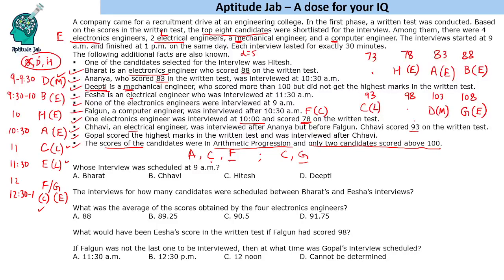Two people — Fagun and Isha — still have unknown scores and unknown interview times relative to each other. This completes the full mapping table for all 8 candidates.